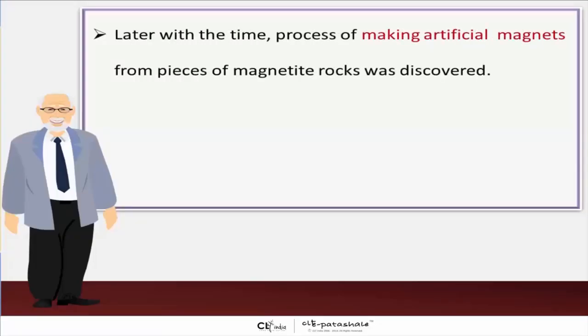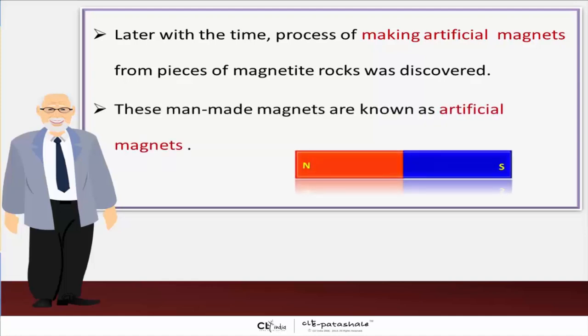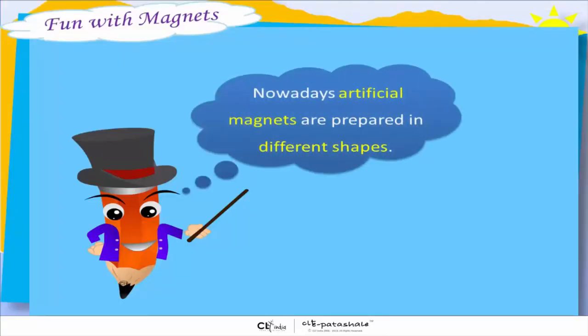Later with the time, process of making artificial magnets from pieces of magnetite rocks was discovered. These man-made magnets are now known as artificial magnets. Nowadays, artificial magnets are prepared in different shapes.